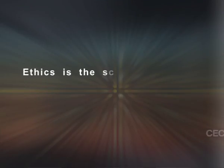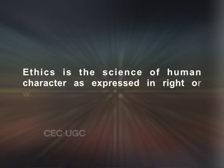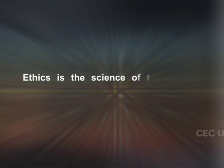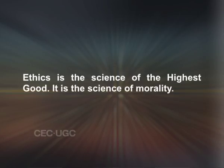The will is the self in action. Thus ethics is the science of human character as expressed in right or wrong conduct. But the rightness or wrongness refers to the good which is the ideal of human life. Thus ethics is the science of the highest good; it is the science of morality. Unlike psychology, ethics is concerned with evaluation of conduct with reference to an ideal. It teaches us how we can pass correct moral judgments upon human conduct, considering it as right or wrong with reference to the supreme ideal of human life.